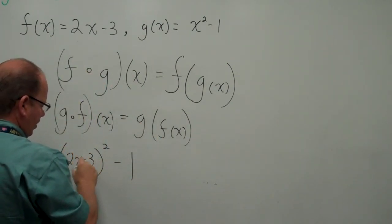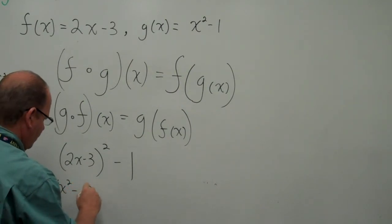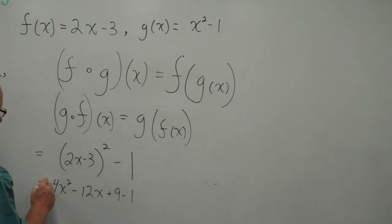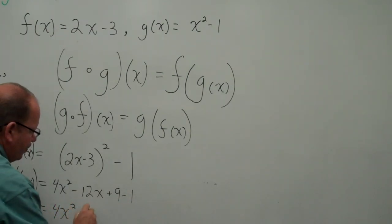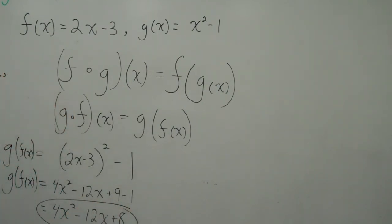(2x - 3). And so we square this, and we get 4x² - 12x + 9 - 1. And the last thing to do is to combine our like terms, and we get 4x² - 12x + 8.